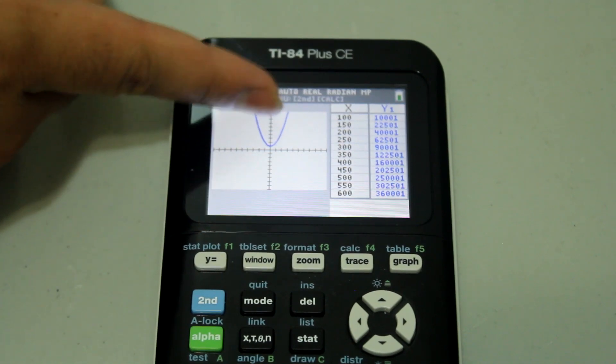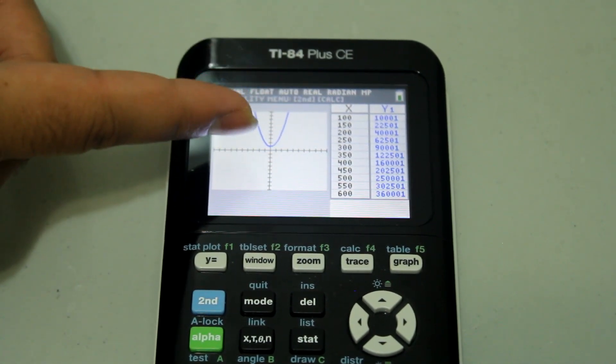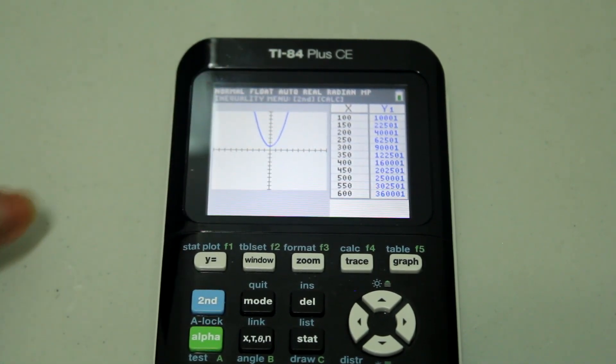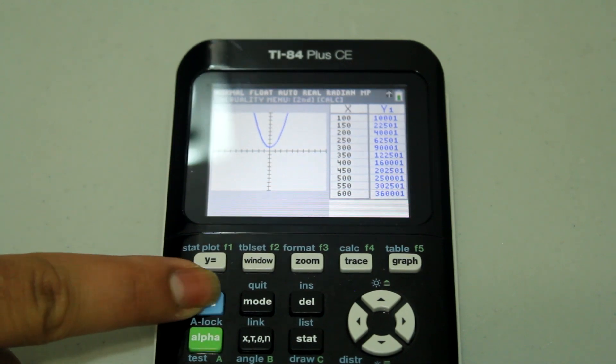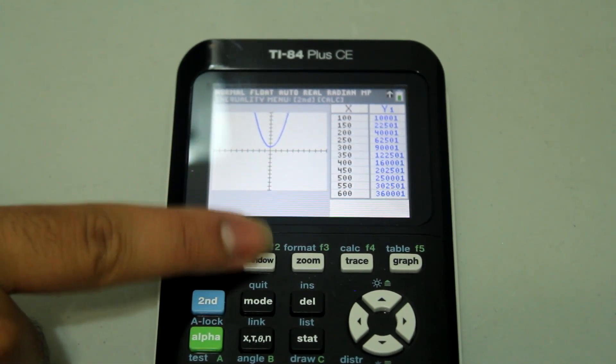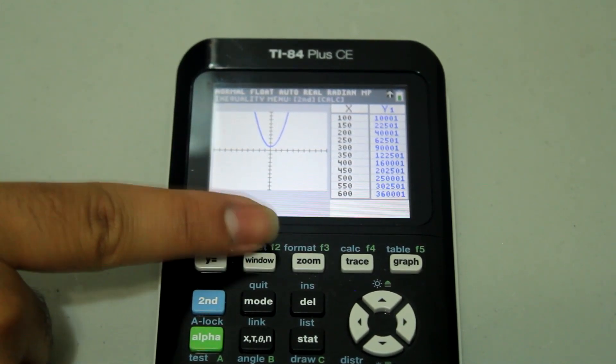But for this equation, I probably want it to start at zero or even a negative number. So hit second and the window button that has table set in blue.